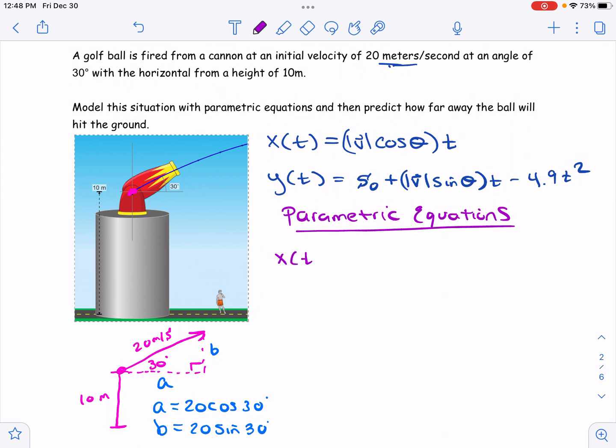So my parametric equations will look like this. So x of t equals, my magnitude is 20, 20 cosine of 30 degrees times t. And then y of t is equal to initial height, which is 10, plus 20 sine 30 degrees t minus 4.9 t squared. Now, if you're in my class, you note that I like to store things in my calculator as letters. So I'm probably going to store that in my calculator as a. I'm probably going to store this as b. It just helps a little bit. I don't have to keep typing 20 cosine 30.